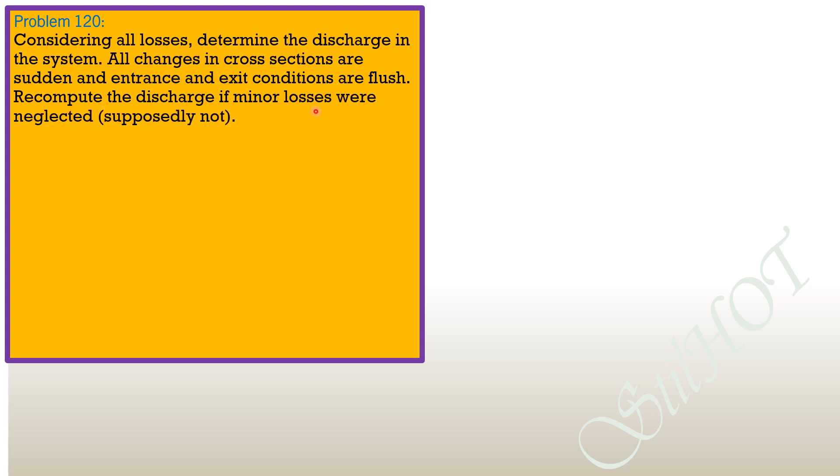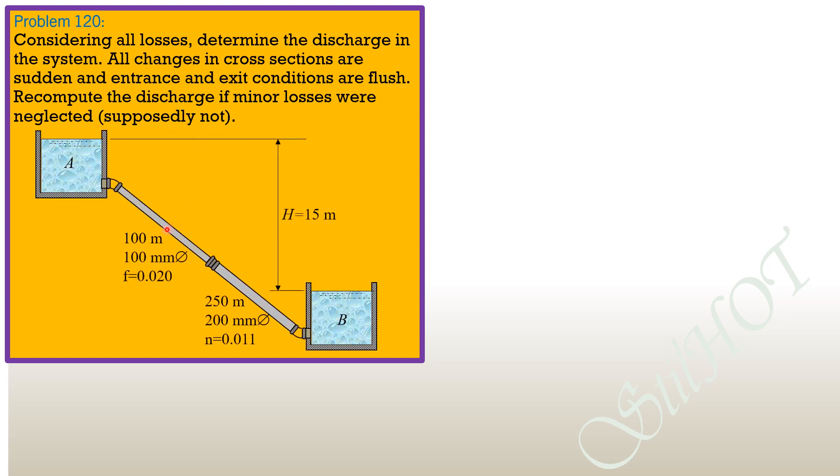Recompute the discharge if minor losses were neglected. For this pipe here, the length is 100 meters and minor losses could be neglected if the length of the pipe is longer than 1500 times pipe diameter. So 1500 times 0.1 meter is 150, this is only 100, so supposedly the minor losses should not be neglected.